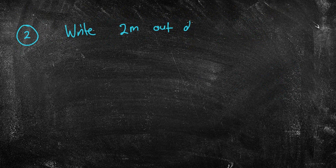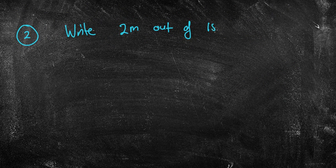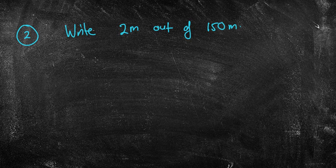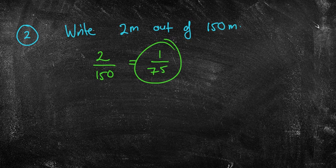Let's now write, let's say, 2 metres out of, let's say, actually, no, I'm going to say, I'm going to say, let's say 150 metres. Okay, that's not what I was going to have. So, can you write this as a fraction? So, nice and easy, 2 out of 150 equals 1 out of 75, bang.